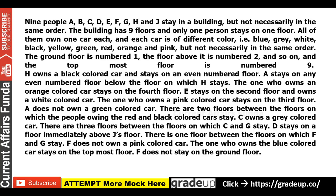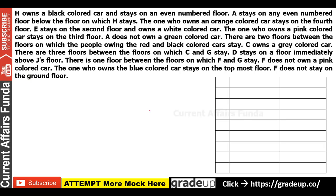Now I'm starting to explain the puzzle. There are 9 persons: A, B, C, D, E, F, G, H, and J. This is a building with 9 floors, and one person lives on each floor. Additionally, all of them own one car each and each car is a different color: blue, grey, white, black, yellow, green, red, orange, and pink.